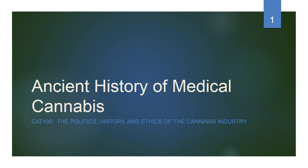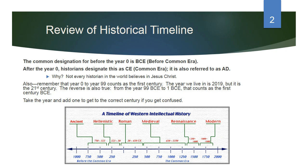Hello, welcome to CAT 109: The Politics, History and Ethics of the Cannabis Industry. Today we're going to be looking at the ancient history of medical cannabis, specifically from about 10,000 BCE to the beginning of the Roman Empire in the first, second, and third centuries after the year zero.